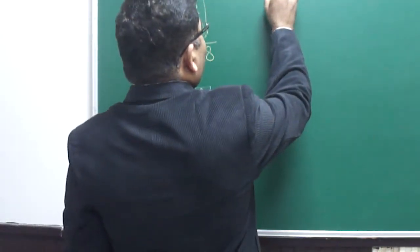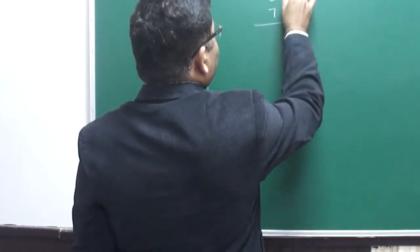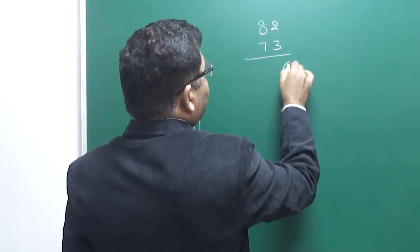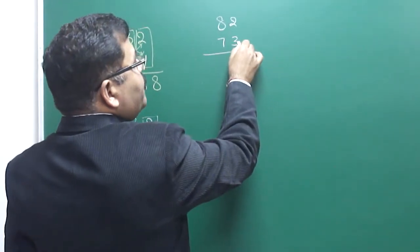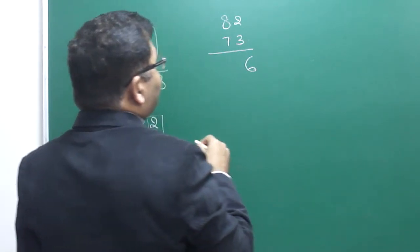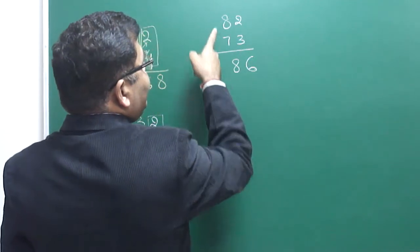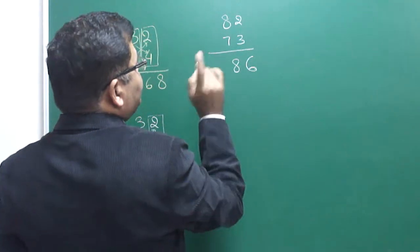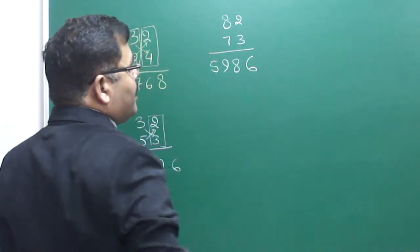Suppose someone has to do 82 x 73. What to do? 3 x 2 = 6. And now I have to do this. 8 x 3 = 24 plus 7 x 2 = 14. 24 plus 14 is 38. 38 write 8 carry 3. 8 x 7 = 56 plus 3, 56 plus 3 is 59. And that will be the answer.